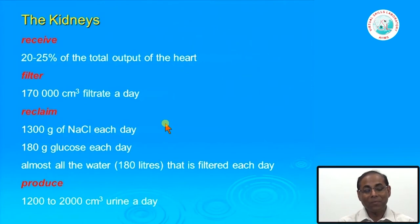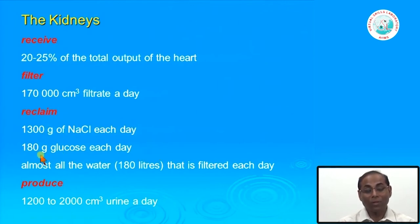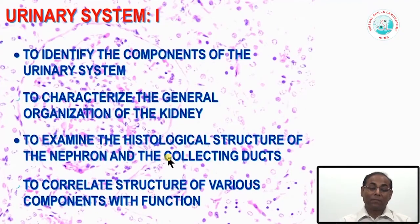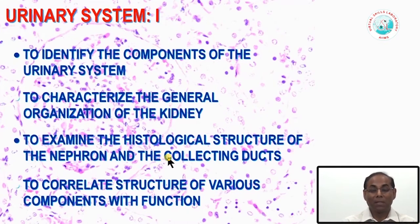The kidney reabsorbs almost all the water—about one extra liter—and the final urine volume is only around 2 liters per day. During that process it reclaims all the sodium chloride and salts, and reclaims 180 grams of glucose every day. That is why renal function for excretion is very specific. In our first class, particularly, we will identify the components of the urinary system and characterize the general organization of the kidney in relation to understanding disease.